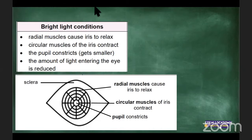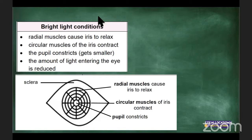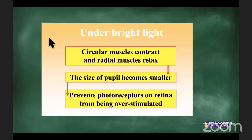In bright light: circular muscles contract, radial muscles relax, and the size of your pupil becomes smaller. Less light can enter. This prevents your photoreceptors on the retina from being over-stimulated.